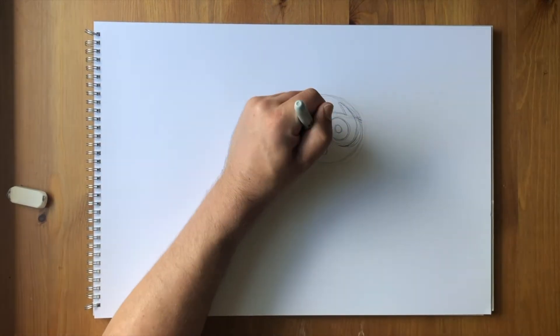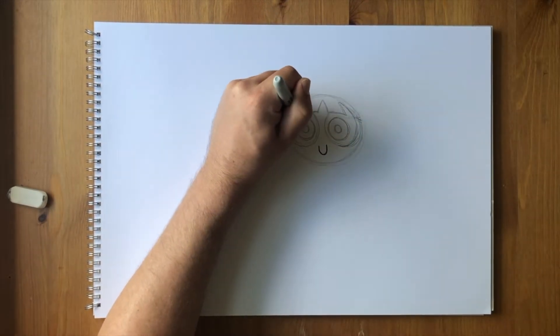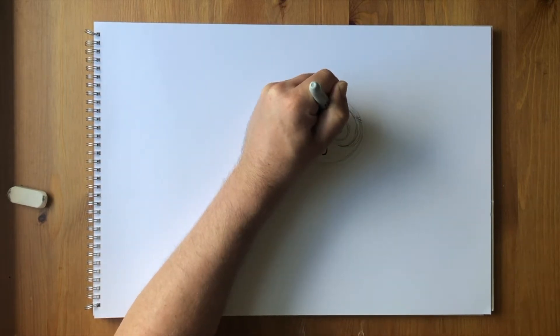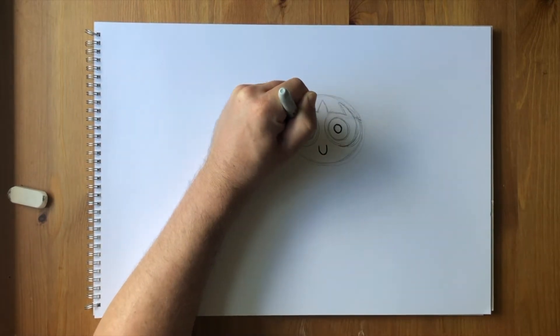Time to grab our black marker. Trace around those pencil lines in Blossom's head, her hair, and facial features, nice and smoothly.